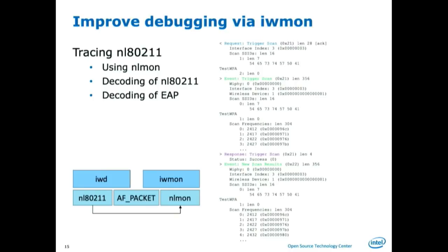One thing nobody did before: we wanted to see what's going on between the daemon and the kernel, so we built iwmon. It's a tracing utility that takes input from Netlink and AF_PACKET and just decodes it — you don't have to put debugging into IWD or tracing. You just take it from the kernel and see what packets are being exchanged. Then you can figure out what went wrong: wpa_supplicant sends some message, the kernel says 'not supported' or 'key is not available,' it keeps sending it, the kernel keeps responding 'key is not available.' And you easily see where things go wrong and what's missing.